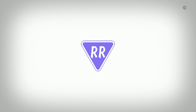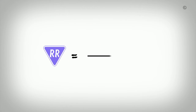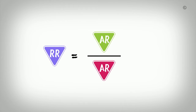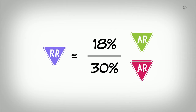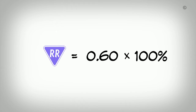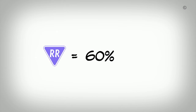To calculate relative risk, we divide the absolute risk of the intervention group by the absolute risk of the control group. From our example, 18% divided by 30% equals 0.60. This tells us that the risk for a fracture among those in the intervention group is 60% of the risk in the control group.